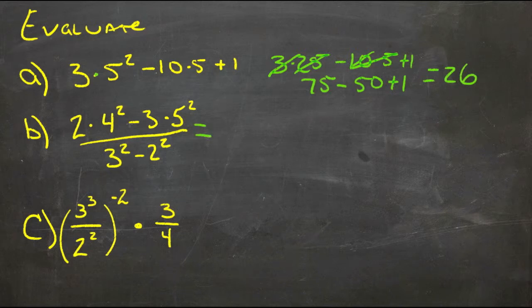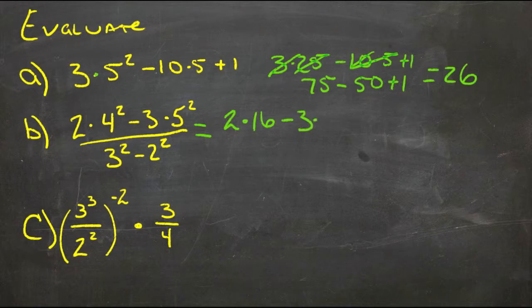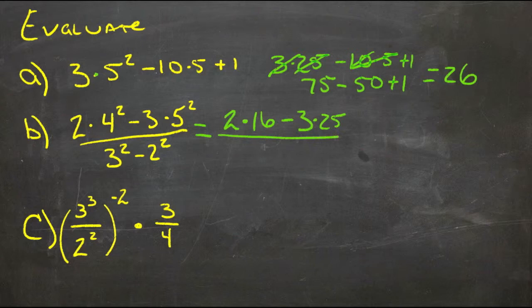For our second example we have powers on the top and powers on the bottom, so we'll deal with them first. So we have two times four squared, that's sixteen, minus three times five squared, that's twenty-five, over three squared, which is nine, minus two squared, which is four.